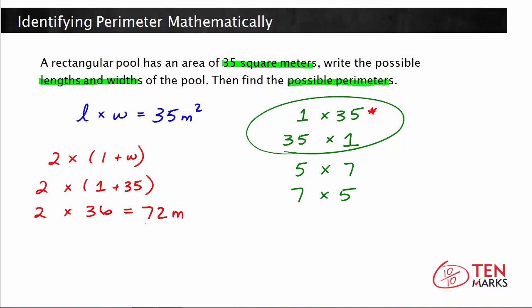You would get the same value of 72 if you had a length of 35 and a width of 1, because the order doesn't matter in addition. So now let's think about this second group here. If you had a length of 5 and a width of 7, you have 2 times 5 plus 7. 5 plus 7 is 12, so 2 times 12 equals 24 meters.